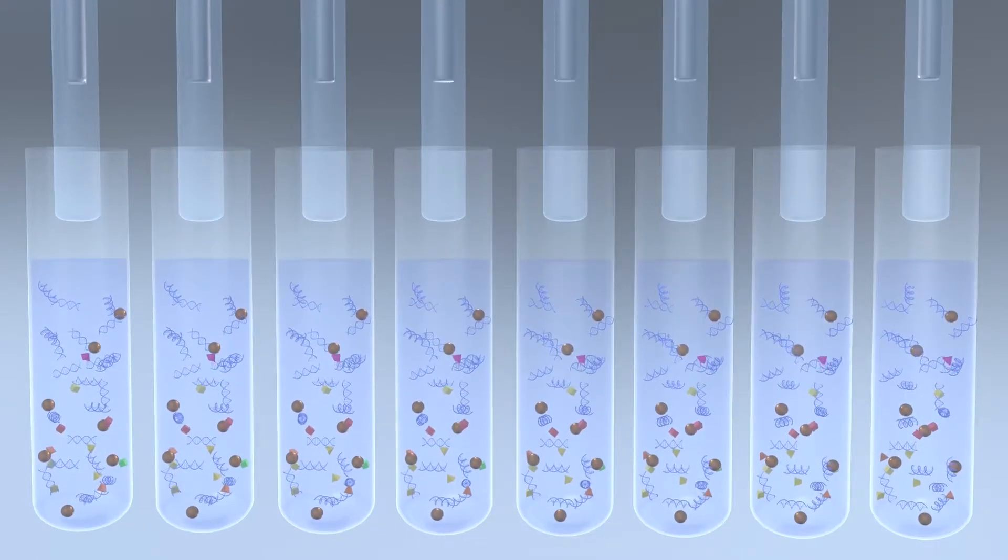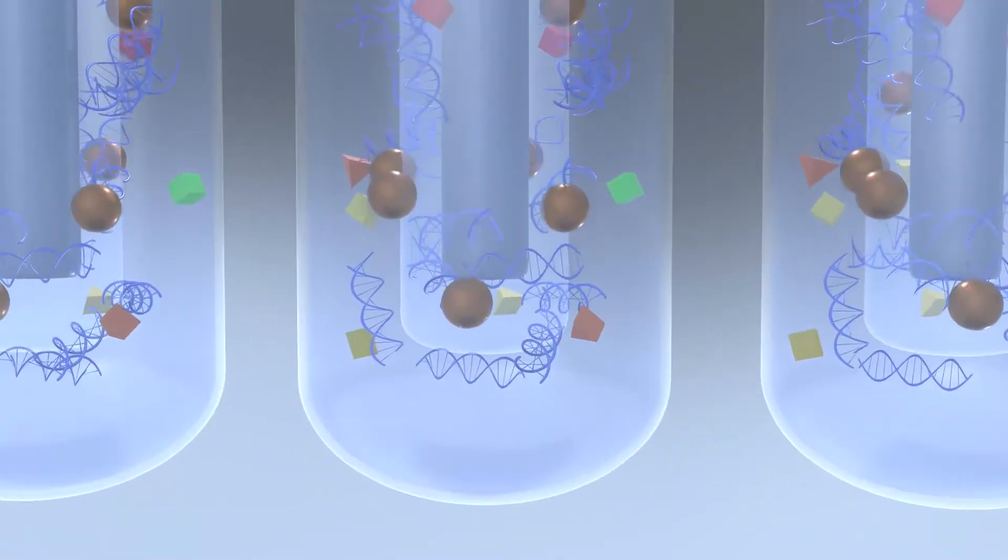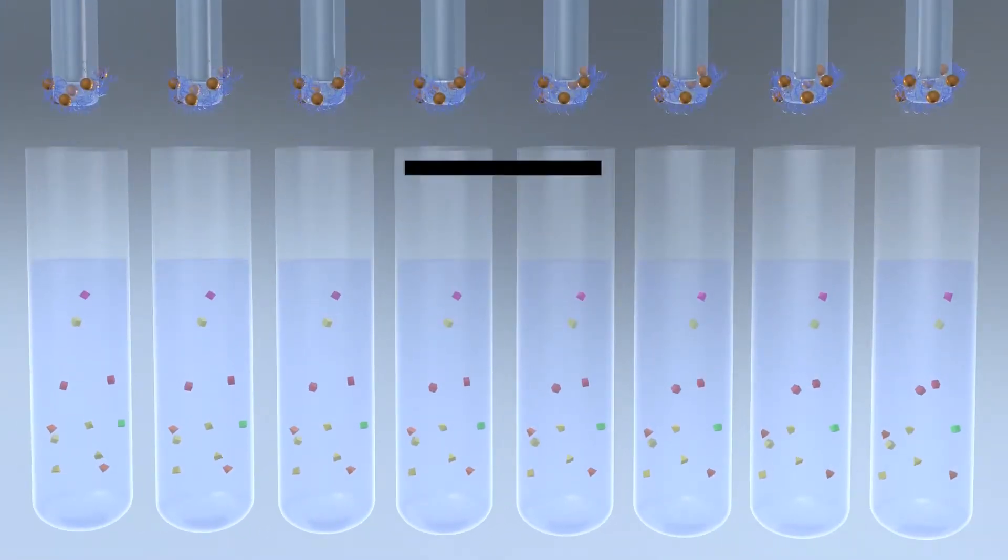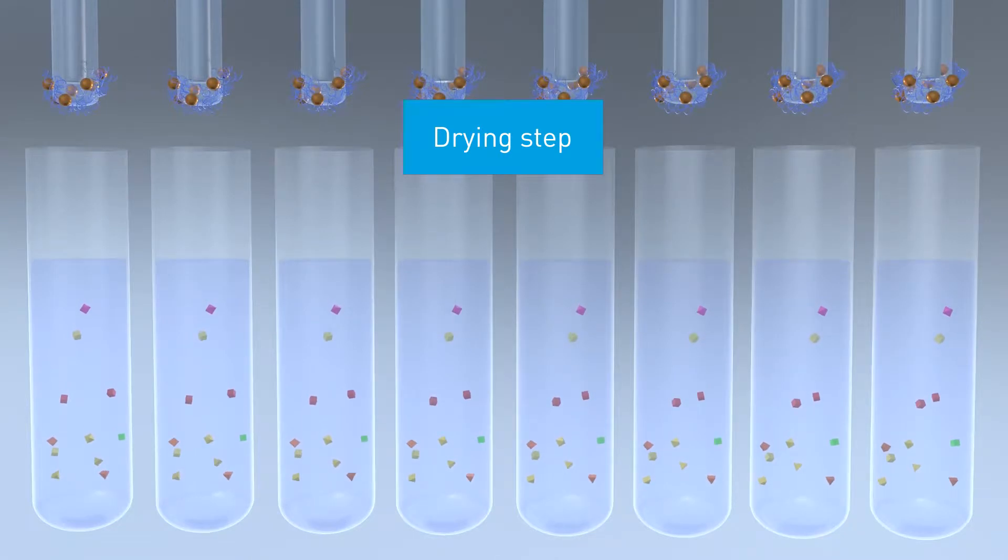The washing step is ideally repeated three times. The last wash buffer contains 80% alcohol. A drying step is required to evaporate this alcohol.